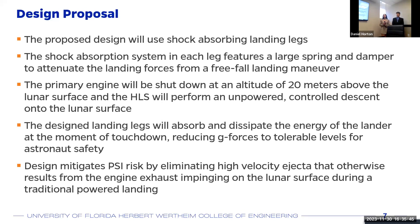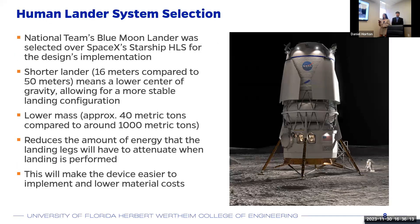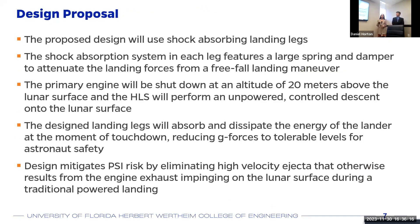How this design basically functions is that first, the primary engine will be shut down at an altitude of 20 meters above the lunar surface. Then the human lander system will perform an unpowered controlled descent onto the lunar surface. The design landing legs will absorb and dissipate much of the energy of the lander at the moment of touchdown, reducing the G-forces to more tolerable levels for astronaut safety. Most importantly, this design mitigates PSI by eliminating any high-velocity ejecta that arises from engine exhaust impinging on the lunar surface during a traditional powered descent.